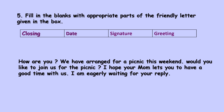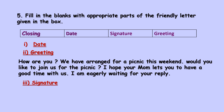Fill in the blanks with appropriate parts of the friendly letter given in the box. The words in the box are: closing, date, signature, greeting. In the first dash: date. In the second dash: greeting. How are you? We have arranged for a picnic this weekend. Would you like to join us for the picnic? I hope your mom lets you have a good time with us. I am eagerly waiting for your reply. In the third dash: signature. In the fourth dash: closing.